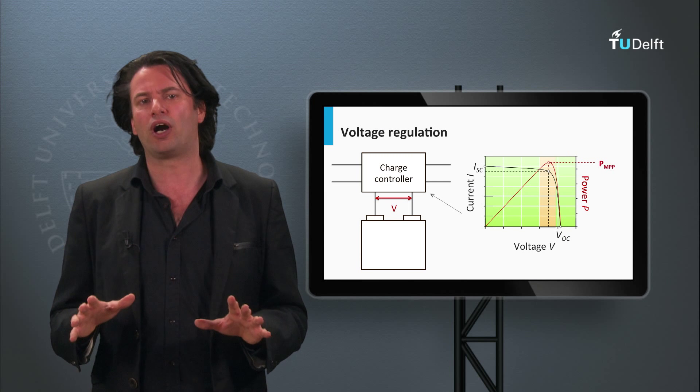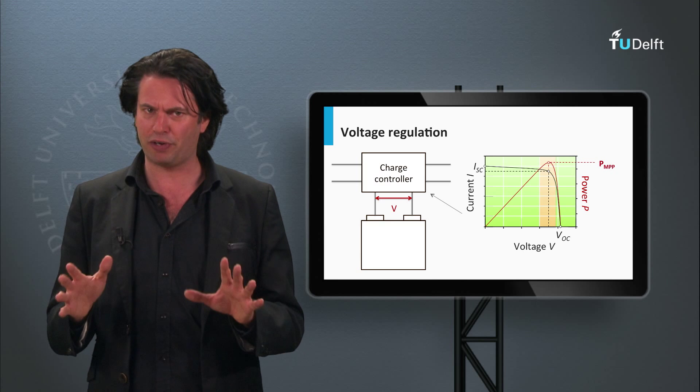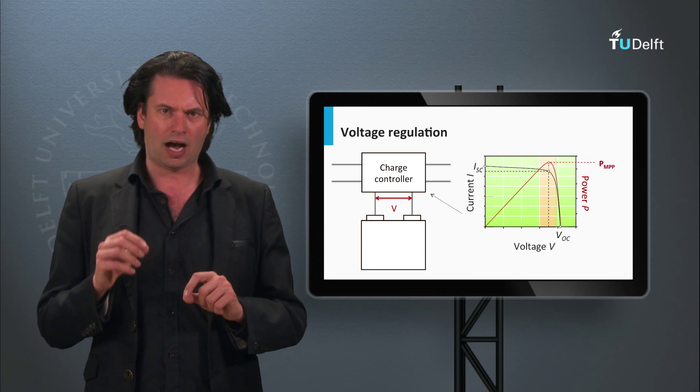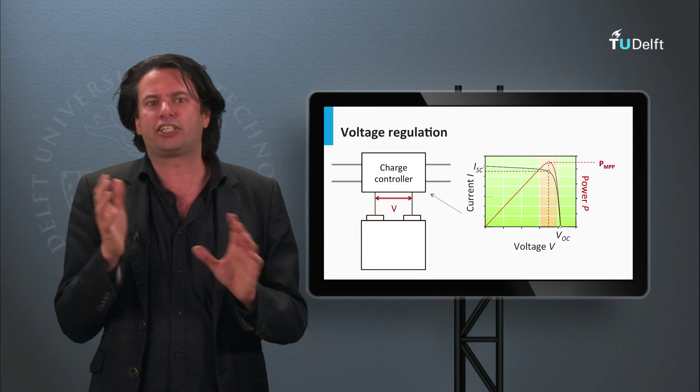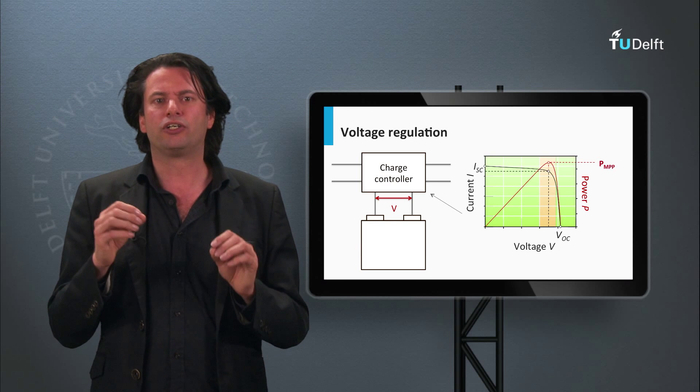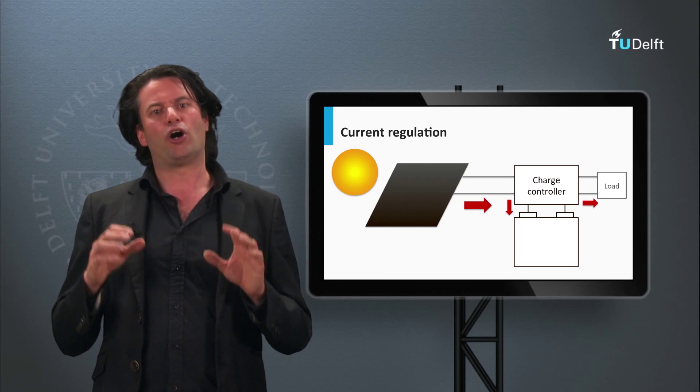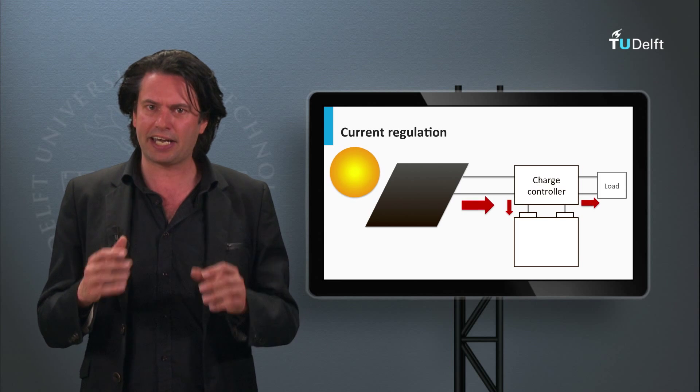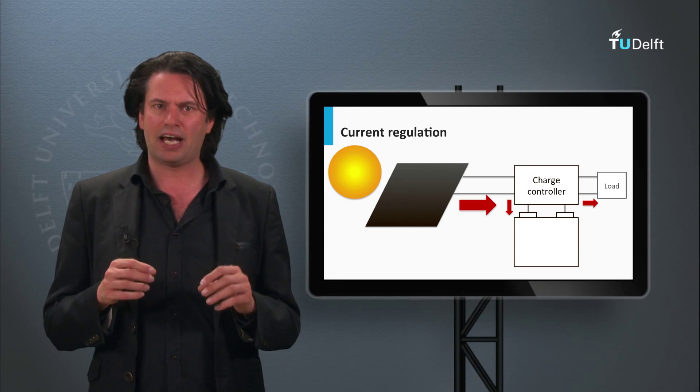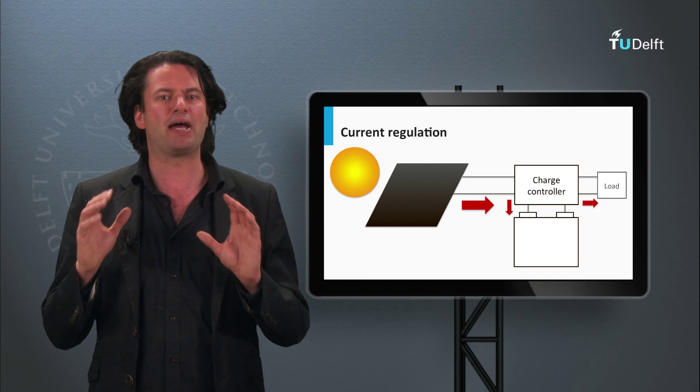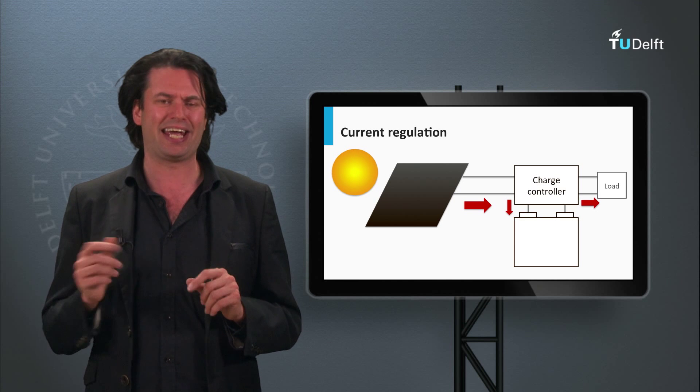We have seen before how the battery has certain C rates defined. Higher the charge discharge rates, the lower the coulombic efficiency of the battery will be. The optimal charge rates indicated by the manufacturer could be adhered to by manipulating the current flowing into the battery.